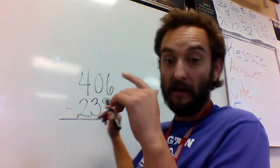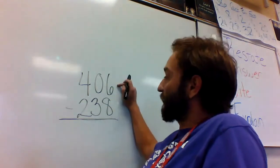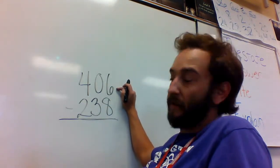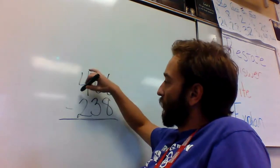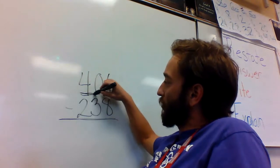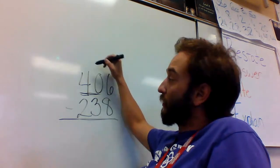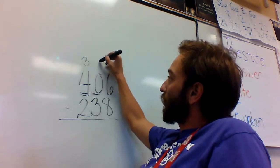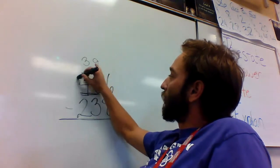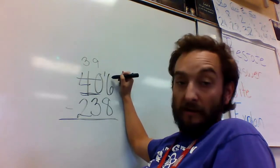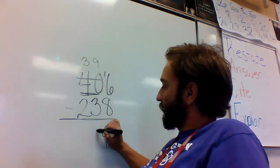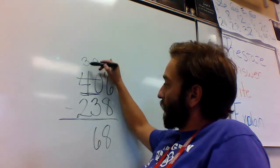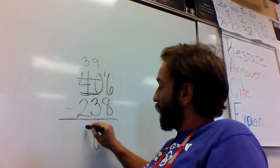Okay. 8 is bigger than 6, so I cannot subtract. I need to borrow. Look here in the tens place, it's a 0, it's not going to work. So let's borrow from 40. One less than 40 is now 39, this becomes 16. 16 minus 8 is 8, 9 minus 3 is 6, 3 minus 2 is 1.